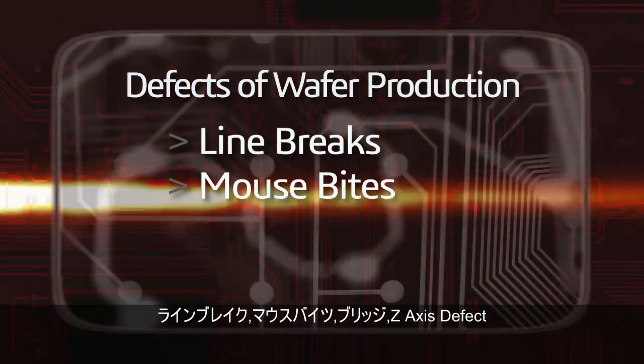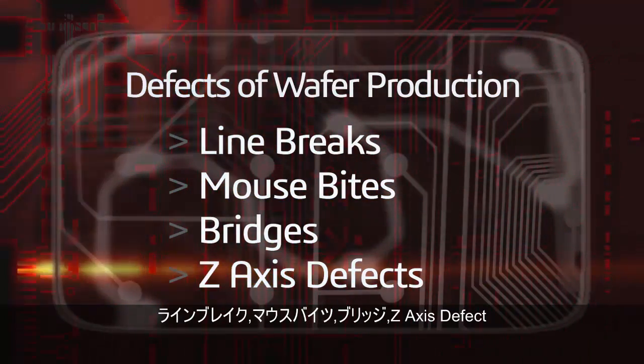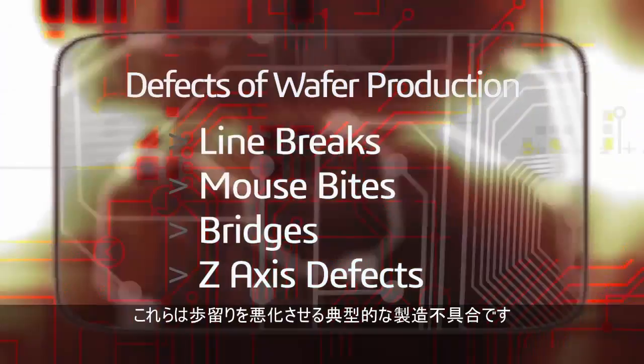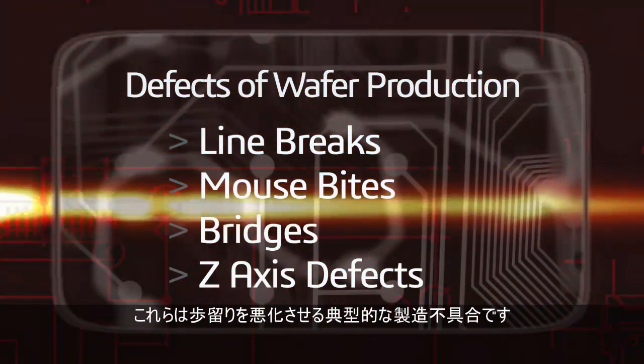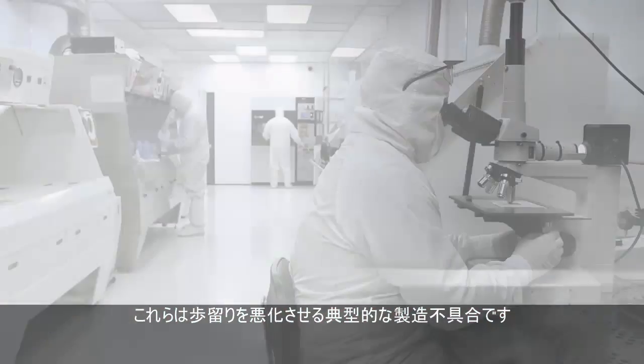Line breaks, mouse bites, bridges, and z-axis defects are common during the manufacturing phase of a new die and lead to costly scrap and reduced yields.